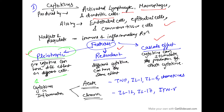The second feature is redundancy, meaning different cytokines can have the same effect. The third is the cascade effect, where one cytokine can stimulate the production of other cytokines. These are the very important features of cytokines.